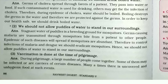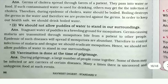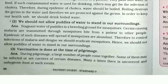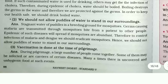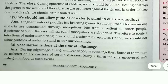We should not allow puddles of water to stand in our surroundings. Stagnant water in puddles is a breeding ground for mosquitoes. Germs causing malaria are transmitted through mosquito bites from a patient to other people. The epidemic of such diseases will spread if mosquitoes are abundant. Therefore, to control infection of malaria and dengue, we should eradicate mosquitoes. Hence, we should not allow puddles of water to stand in our surroundings.